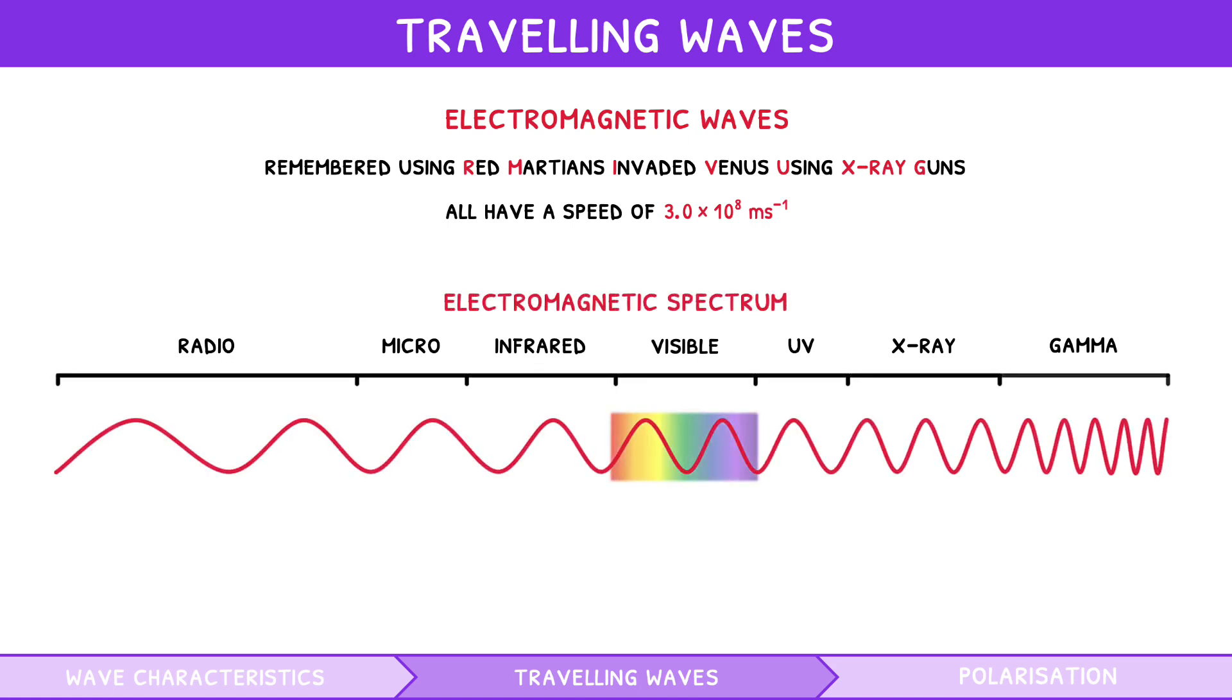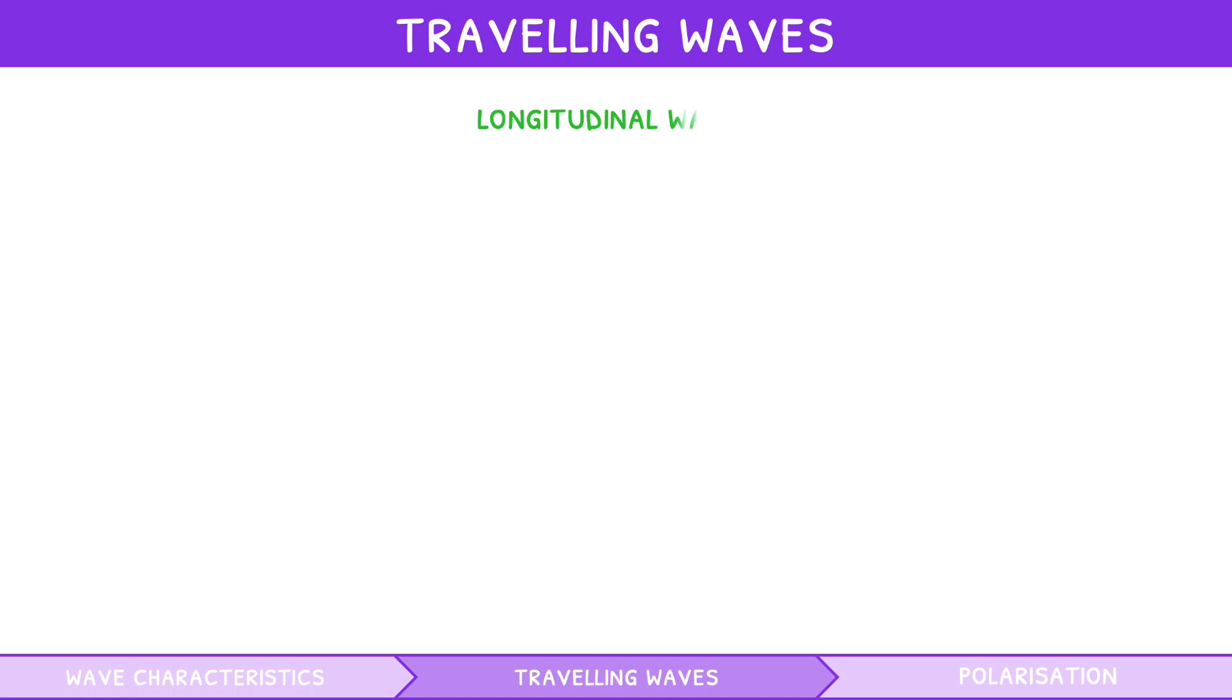In this spectrum, as we progress from radio waves to gamma waves, there is an increase in energy and an increase in frequency, but a decrease in wavelength. Now let's look at longitudinal waves.